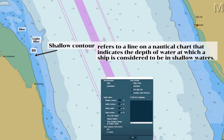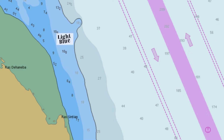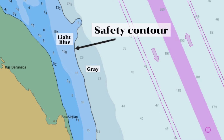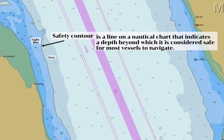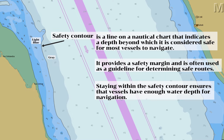The program will never display a contour lesser than the set value. For example, if we set the shallow contour to 11 meters and the available contours are 10 and 20 meters, a 20-meter contour will be displayed, not the nearest contour of 10 meters. Next, the contour between the light blue and gray area shown in a bold line is a safety contour. A safety contour is a line on a nautical chart indicating a depth beyond which it is considered safe for most vessels to navigate. It provides a safety margin and is often used as a guideline for determining safe routes, ensuring that vessels have enough water depth for navigation.